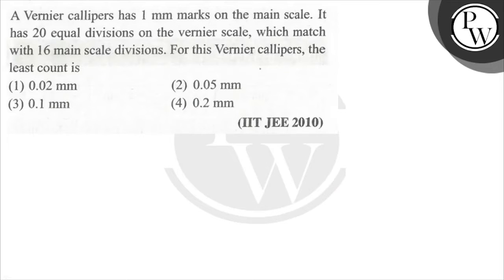Hello, let's see the question. A Vernier caliper has 1 mm marks on the main scale. It has 20 equal divisions on the Vernier scale which match with 16 main scale divisions. For this Vernier caliper, what is the least count?